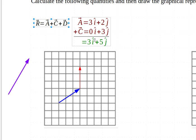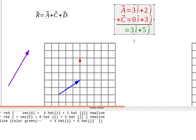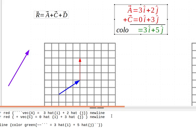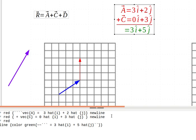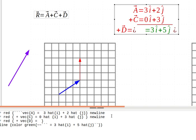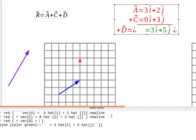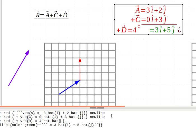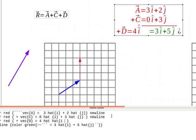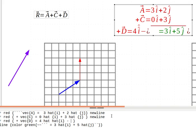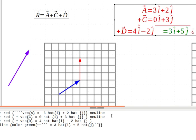Well, I would do the same sort of thing I've got up here, but I would add in, and don't worry about all this code here for how I'm doing it, plus vector D, and vector D is 4 in the i minus 2 in the j.